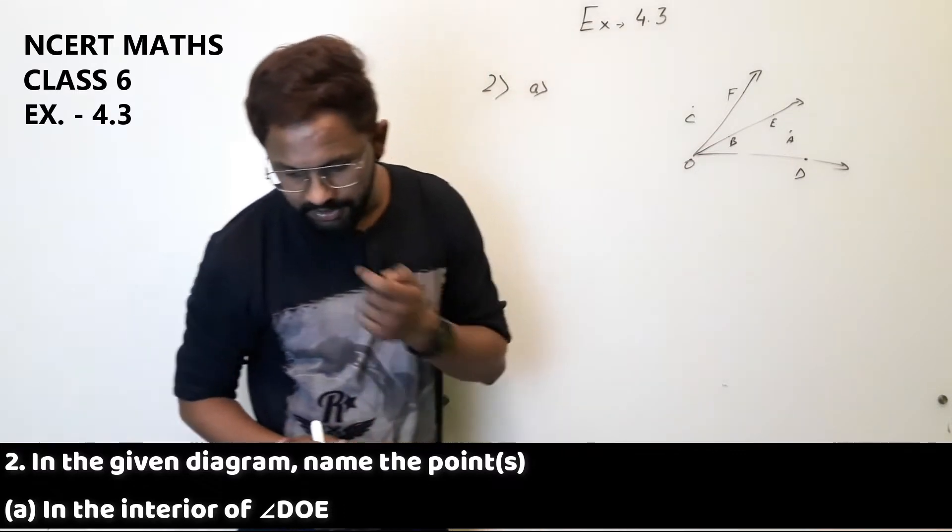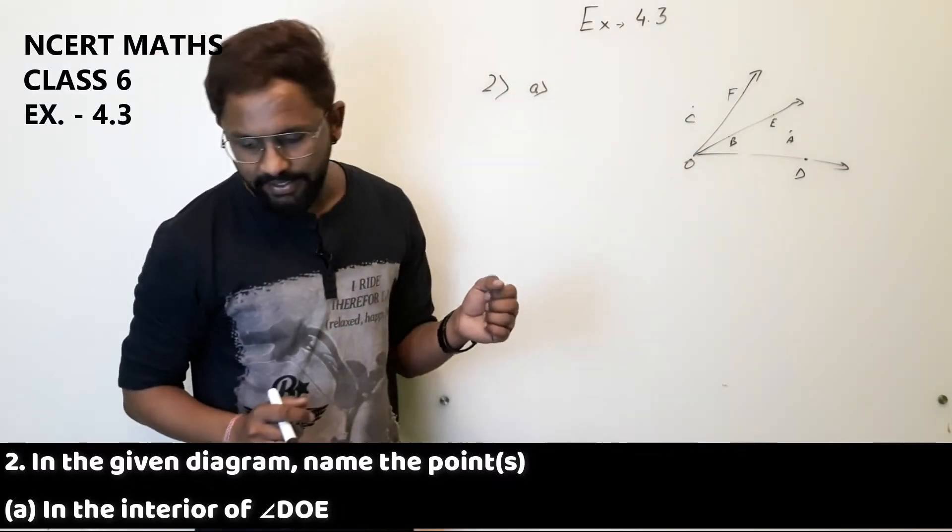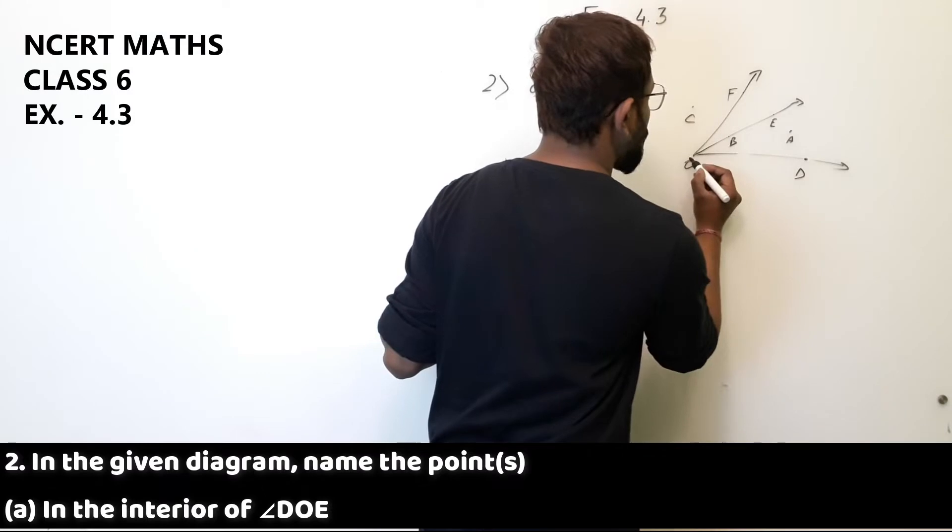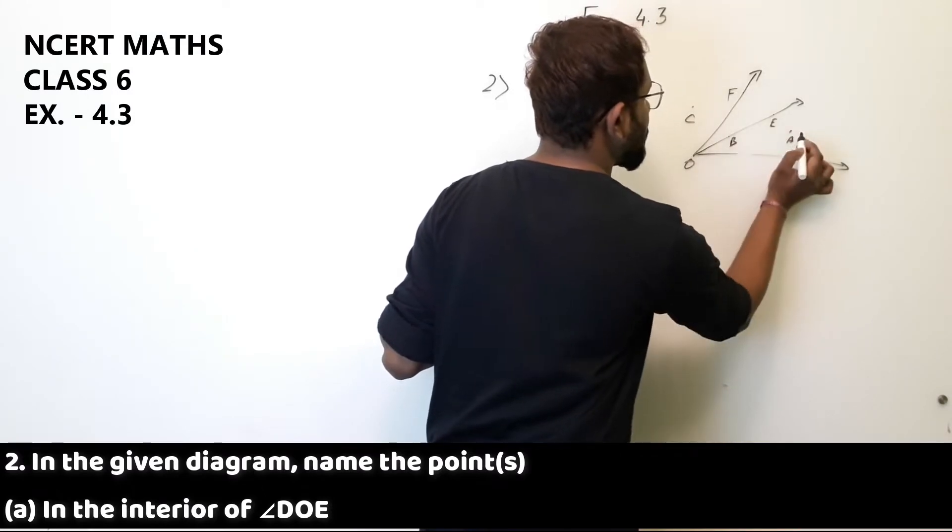Now the first part is in the interior of angle DOE. Angle DOE, the interior point will be point A.